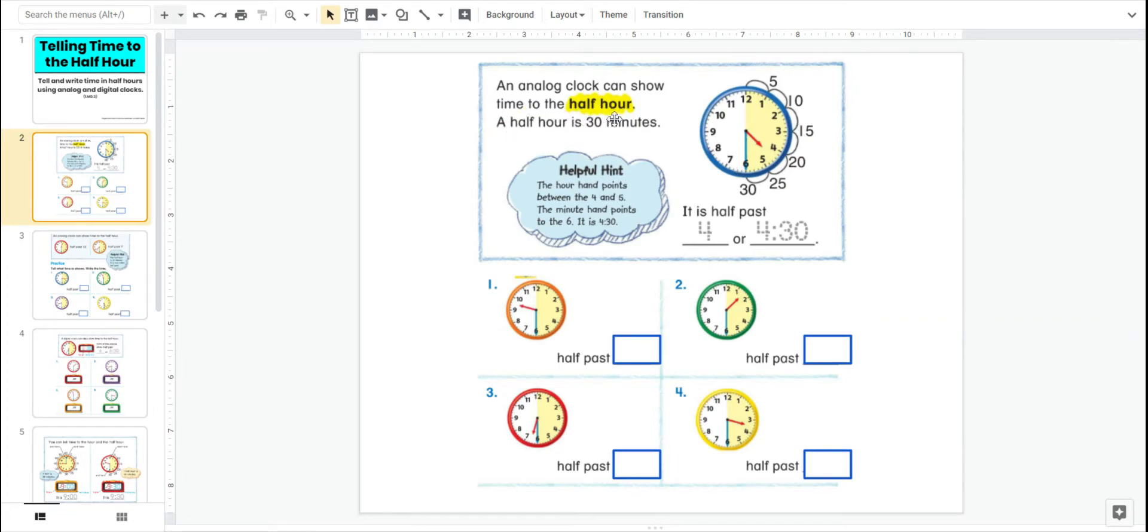A half hour is 30 minutes. So here's our helpful hint. The hour hand points between the four and the five. The minute hand points to the six. It is 4:30. So that's the tricky part about half hour, you guys. The little hour hand is between two numbers.